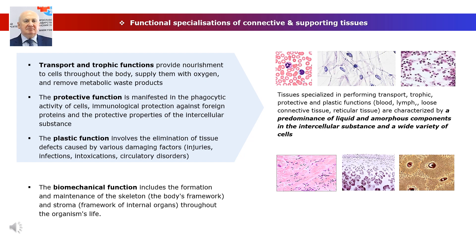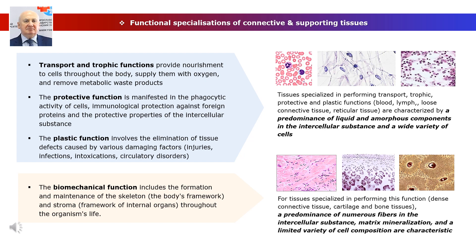The plastic function involves the elimination of tissue defects caused by various damaging factors such as injuries, infections, intoxications, and circulatory disorders. Tissues specialized in transport, trophic, plastic, and protective functions — blood, lymph, reticular tissue, loose connective tissue, adipose tissue — are characterized by a predominance of liquid and amorphous components. The biomechanical function includes the formation and maintenance of the skeleton and stroma of internal organs. For tissues specialized in this function — dense connective tissue, cartilage, and bone tissues — a predominance of numerous fibers and matrix mineralization are characteristic.